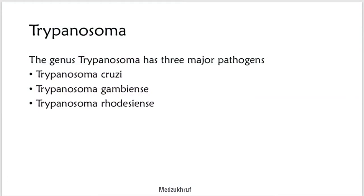Trypanosoma is a genus. It has three main pathogens: the first one is Trypanosoma cruzi, then Trypanosoma gambiense, then Trypanosoma rhodesiense. In this lecture I'll talk about Trypanosoma cruzi, and the remaining two will be discussed in the next lecture.